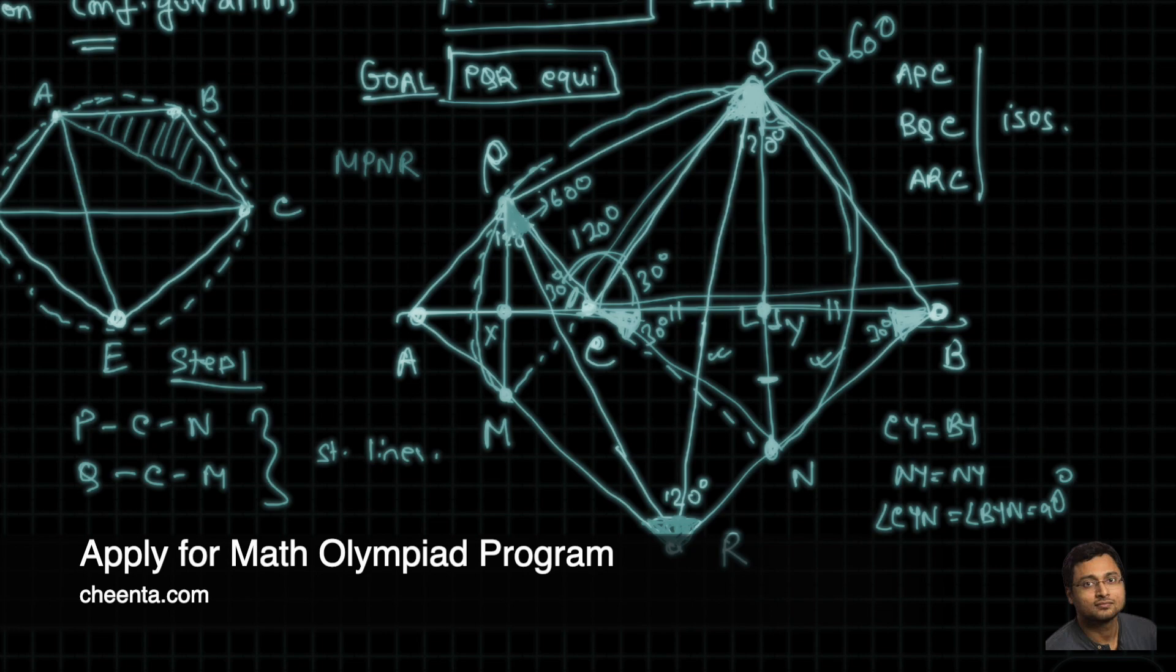So we found a cyclic pentagon now. Because this is the circle that we found earlier, which passes through the vertex M, P, N, also passes through Q. Because MPQN was cyclic. Now we prove that MPNR is cyclic. So the circle also passes through R. So we found a beautiful cyclic pentagon.